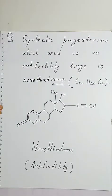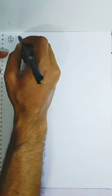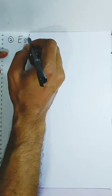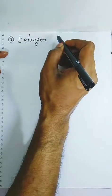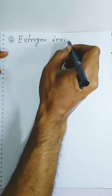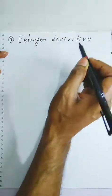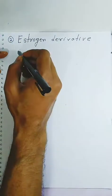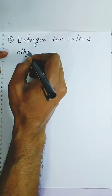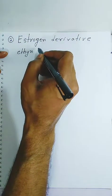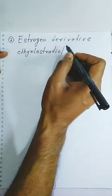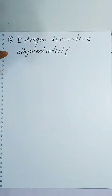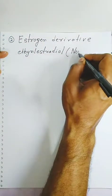Now we are going to see the second part — estrone derivatives. These are for females. The name used is ethynyl estradiol, also called Noestrol. The molecular formula also contains carbon 20.